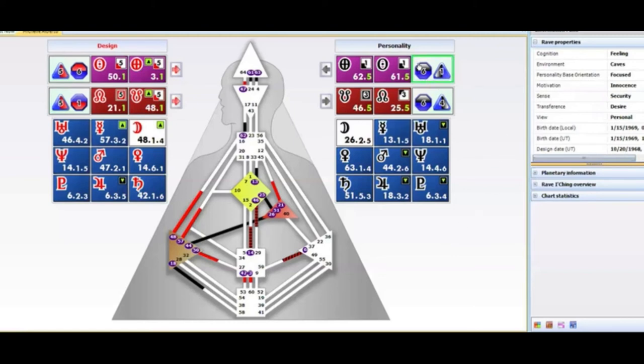And then we finally get to the motivation up on top, which is the sun earth personality on the black side here on the right hand side. And in this particular example, we have the color six and the tone one and the variable to the left. So this is all about security. And the motivation is innocence. The transference is desire. So this person really needs to learn how to step out of desire and into their innocence.